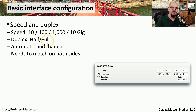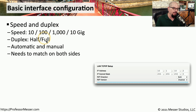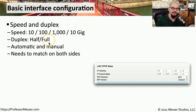One important consideration is that these settings need to match on both sides of the wire. So if you're configuring a device to be 1 gig and full duplex, then the switch on the other side of the wire needs to also be configured for 1 gig and full duplex.